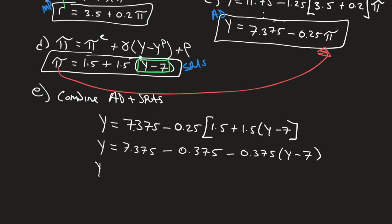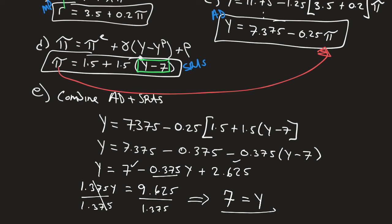So let's do this out. Y equals 7.375 minus 0.375 is just going to equal to 7 minus 0.375 times Y plus, and let me go ahead and plug this into my calculator to make sure, 7 times 0.375 is going to equal to 2.625. I'm going to add 0.375 Y to each side to get 1.375 Y equals, and I'm going to combine the 7 and the 2.675 to get 9.625. And when we divide both of these by 1.375 to get rid of it there, 9.625 divided by 1.375 into the calculator, we get 7. So our current level of output is 7.